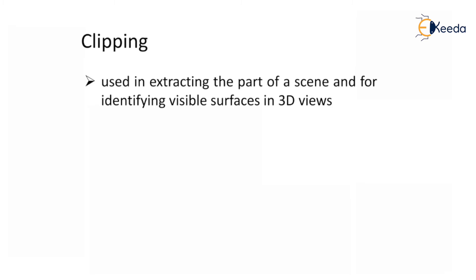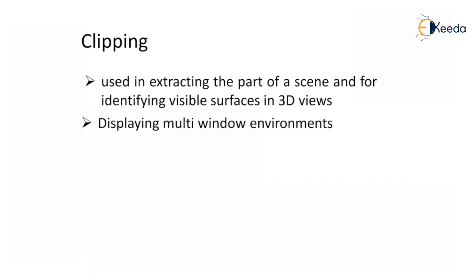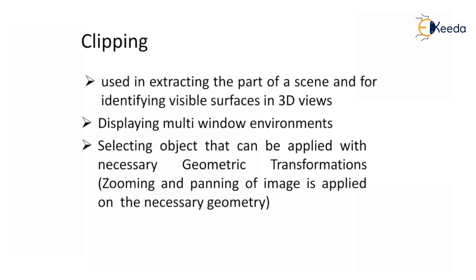Clipping is used to extract a part of a scene and for identifying visible surfaces in the window. It is also used for displaying multi-window environments, selection of objects that can be applied with necessary geometric transformations, and zooming and panning of an image on the necessary geometry.